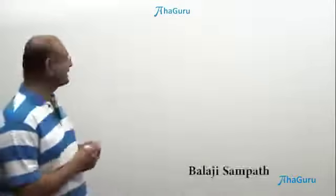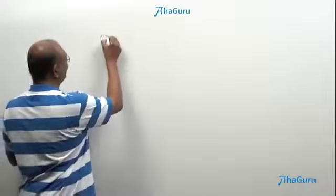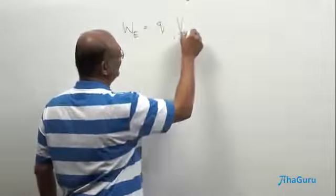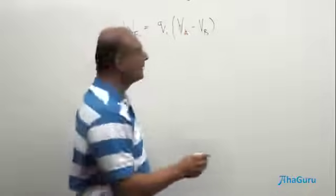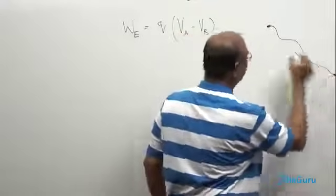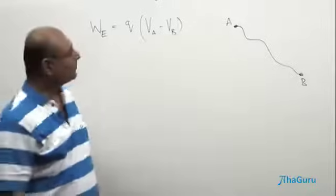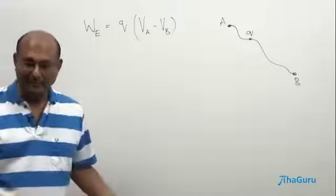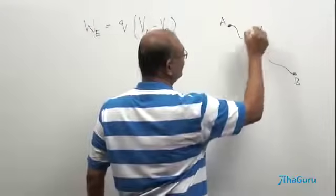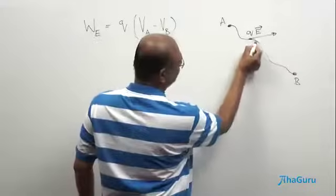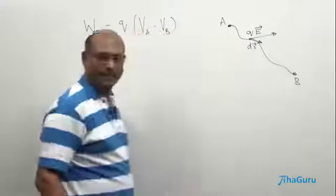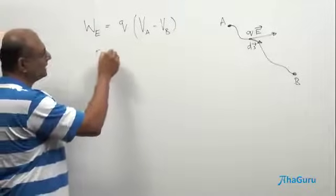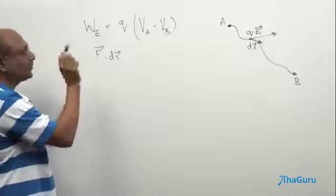Let's quickly understand the idea we've been using. The work done by the electric field is q times (Va minus Vb), that is the potential drop from a to b. If I take a charge and move it from a to b, the electric field does some work. The electric force on charge q is q times E. So if the force is in some direction and you have a displacement ds, the small work done is force dot ds.